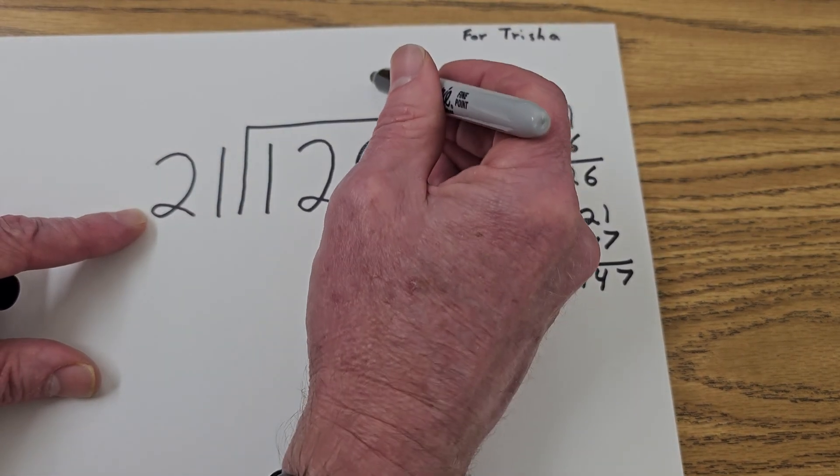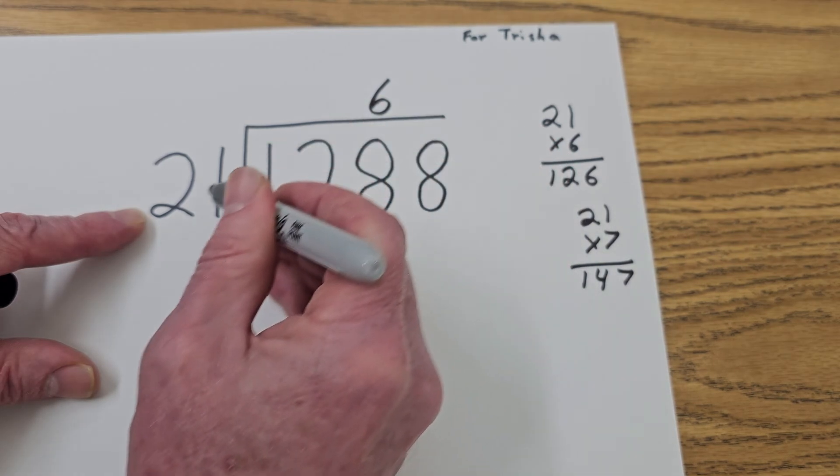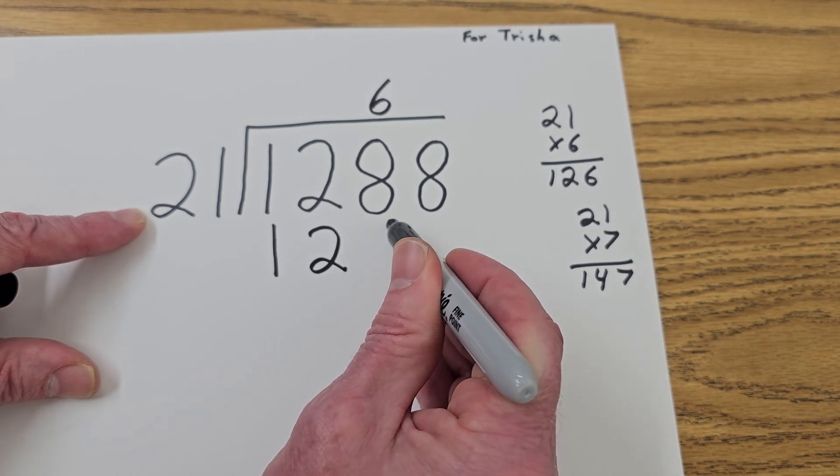So let's go ahead and put the 6 right here, Tricia. So I'm going to put 6 right here, and then multiply 6 times 21 would be 126. So I'm writing 126 right here.